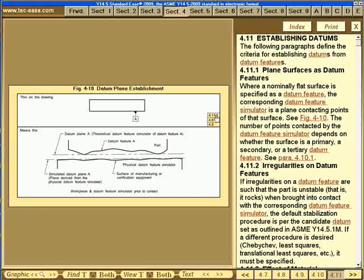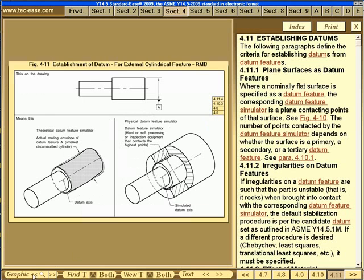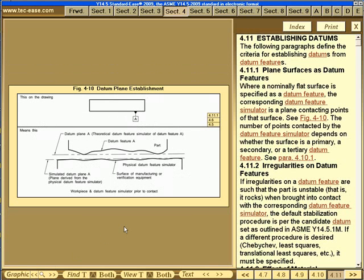Other features of the software include full search capabilities for both text and graphics, a magnifying feature to get a closer look at a call-out or dimension on the drawing, the ability to flip through text and graphics with the click of a mouse, a full index, and printing.